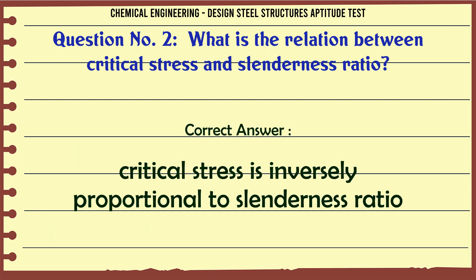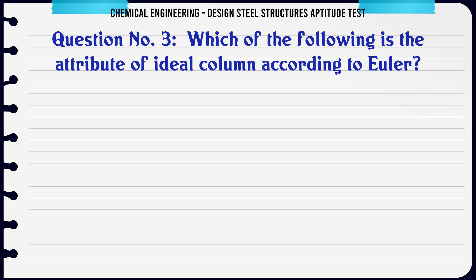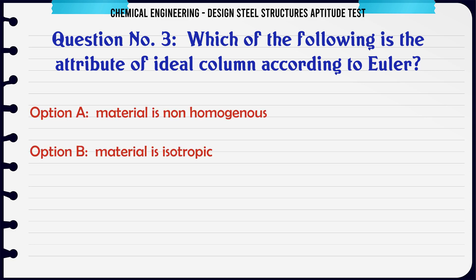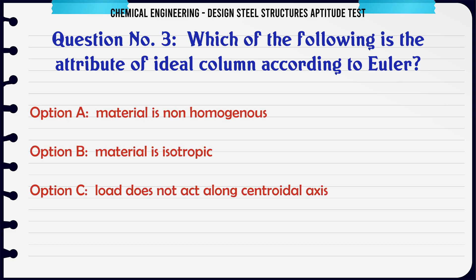The correct answer is: Critical stress is inversely proportional to slenderness ratio.